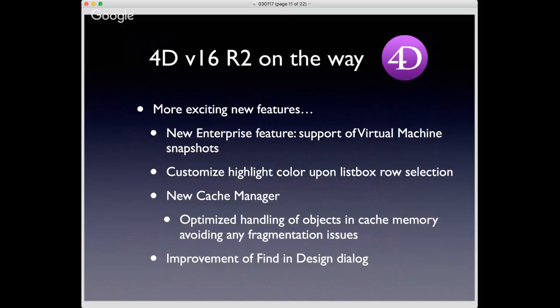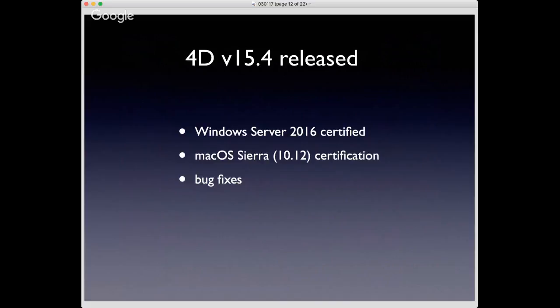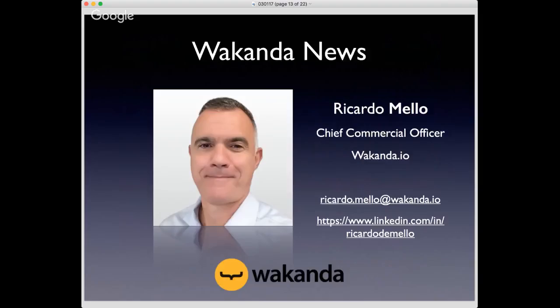R2 has a brand new cache manager that optimizes handling of 4D objects and cache memory to avoid fragmentation, and an improvement to the find and design dialogue. R2 is going to be a really great release, and jumping on the nightly build bandwagon is a good way to help drive quality assurance and new feature development with 4D. V15.4, if you're planning to stick with V15, buys you Mac Sierra 10.12 certification, Windows Server 2016 certification, and bug fixes.